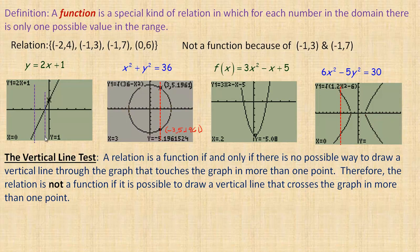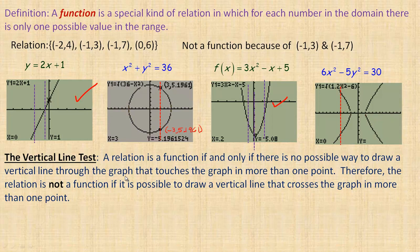The line — no matter where we draw a vertical line — it's only cutting through one place. We're not finding two different points with the same x value. So that's a function. The same is true with the parabola: drawing vertical lines anywhere through it, every single one is touching in just one place. That's also a function. This is called the vertical line test: a relation is a function if and only if there's no possible way to draw a vertical line through the graph that touches it in more than one point.